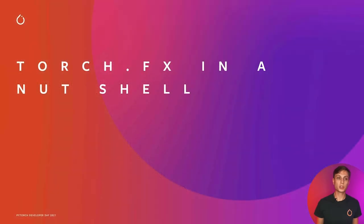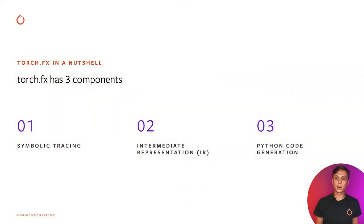So let's cover what Torch.fx actually is and how to use it. Torch.fx has three main components. First, it has a symbolic tracing mechanism to capture the program. Second, it has an intermediate representation, or IR, that is a data structure representing the code of the captured program. Finally, it has Python code generation to return this IR back to the Python ecosystem. This is the typical pipeline used in Torch.fx, but each of these components can be used separately as well.